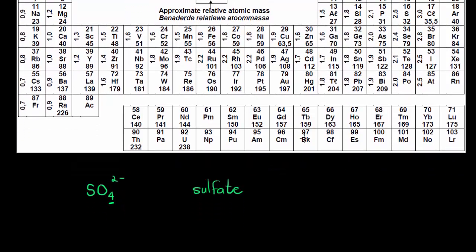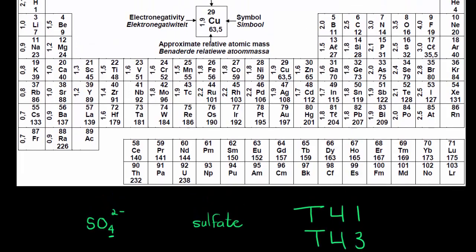Let me show you a very easy way to find these charges and how to name them. It is called the T41 or T43 system — that's kind of all you have to remember, plus a few small things. We are only going to work with certain elements — the only ones you'll really encounter in polyatomic ions.